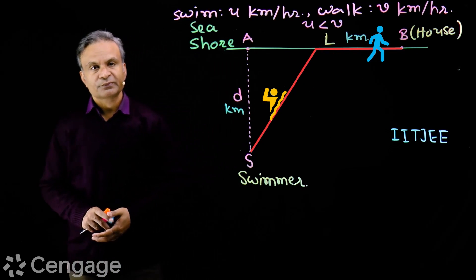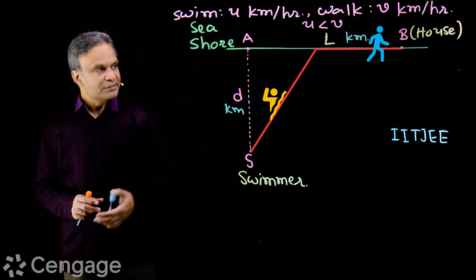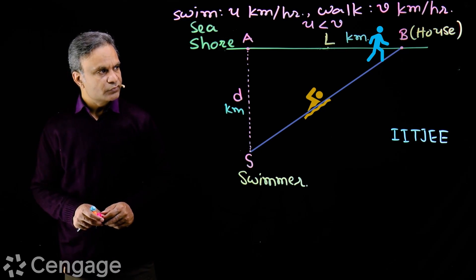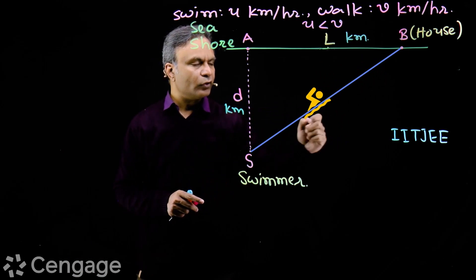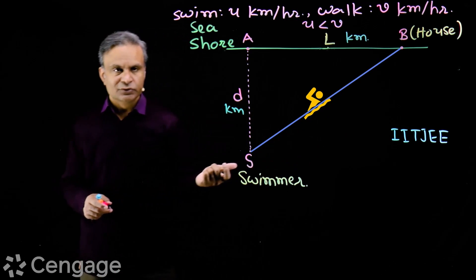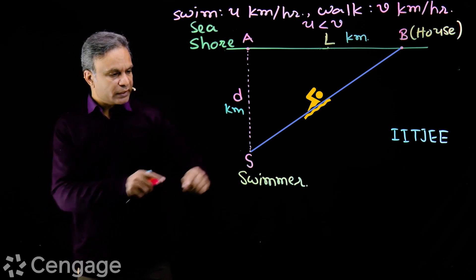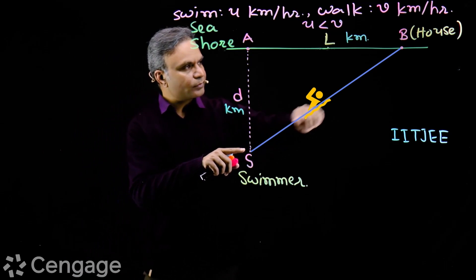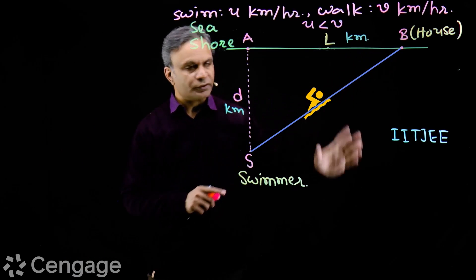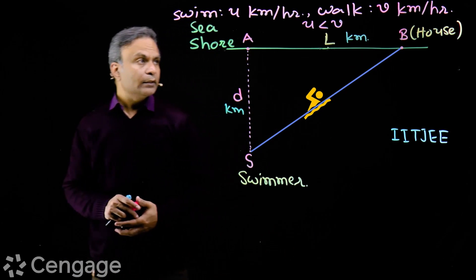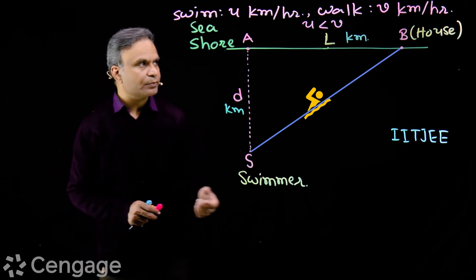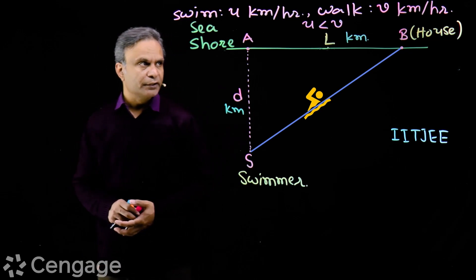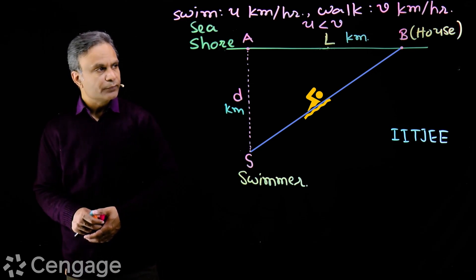Obviously, when he swims all the way to his home, the time taken will not be the shortest, because the speed of swimming is less than the speed of walking — U is less than V.